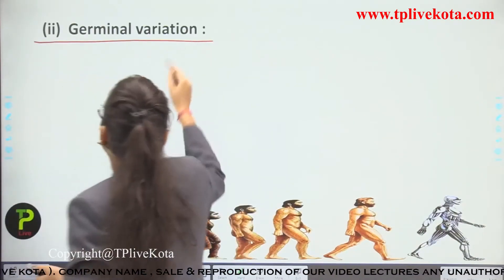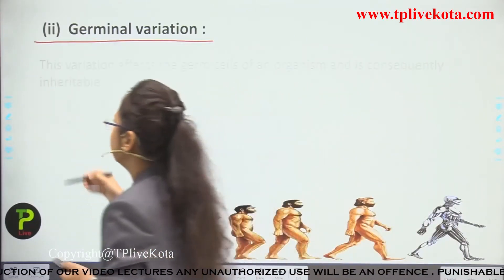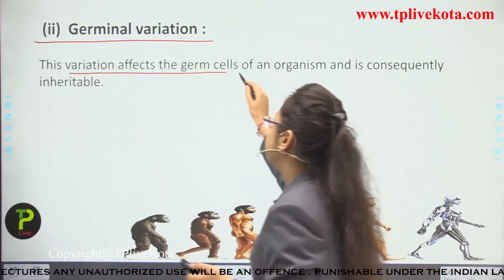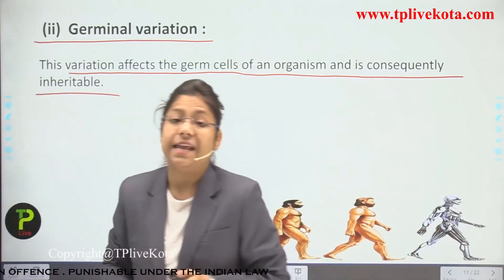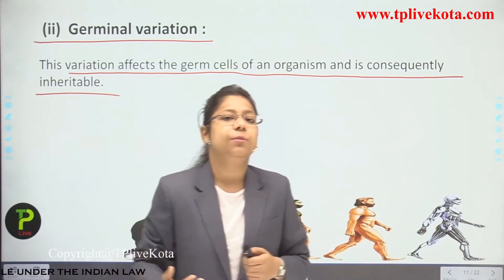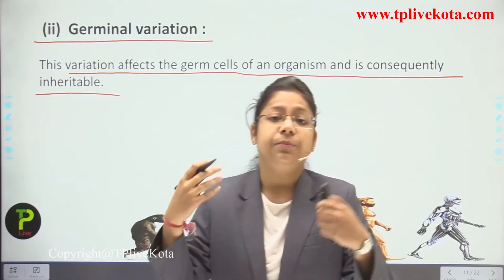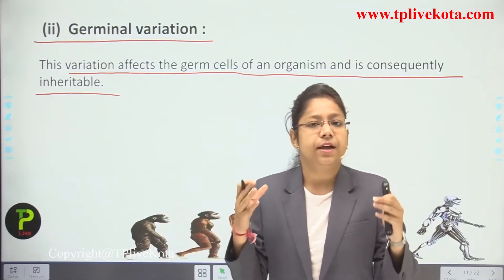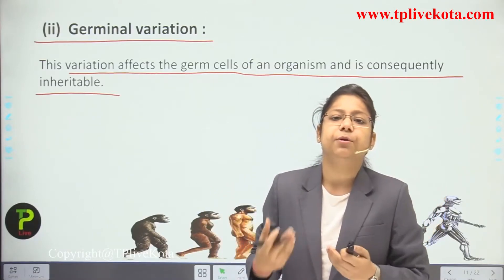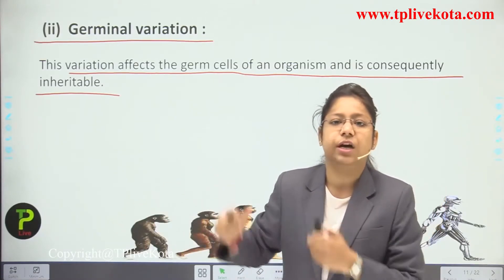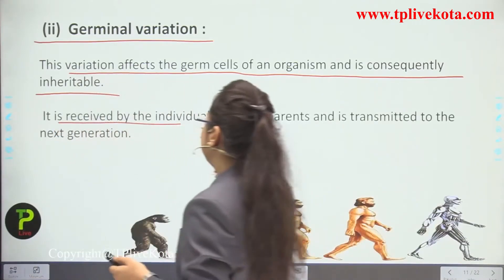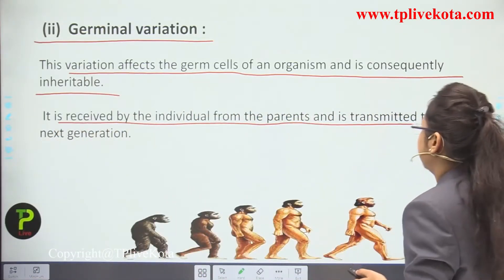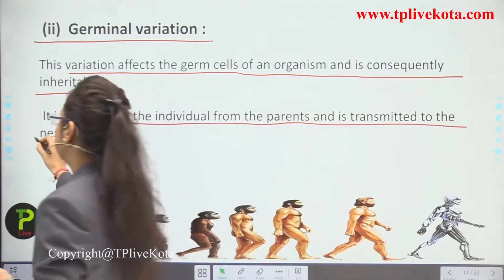Germinal variation affects the germ cells of an organism and is consequently inheritable. As mentioned, if a person has blue eyes, curly hair, or a particular skin color, these types of genes will get inherited to the next generation. It is received by the individual from the parents and is transmitted to the next generation as well.